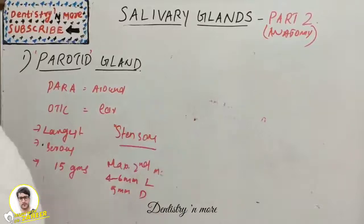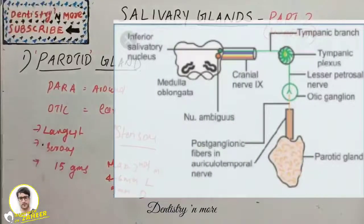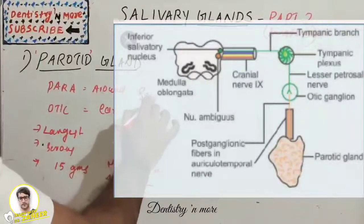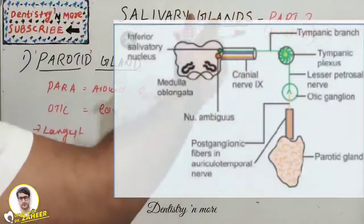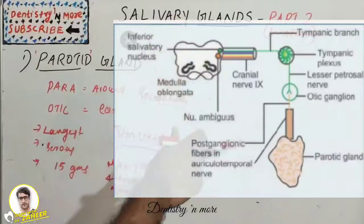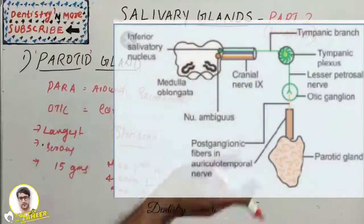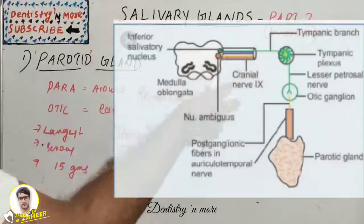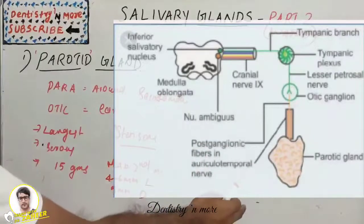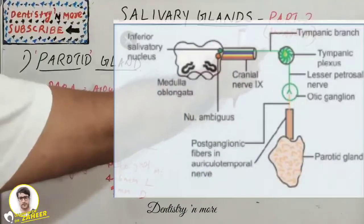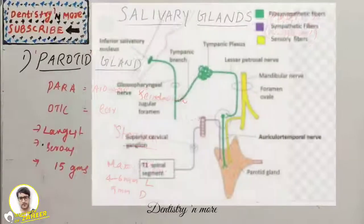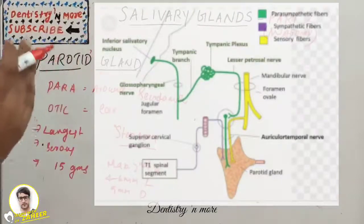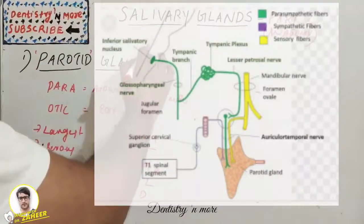The nerve supply to the parotid gland includes parasympathetic secretomotor fibers: preganglionic fibers arise from the inferior salivatory nucleus, travel via the ninth nerve, and relay in the otic ganglion. Postganglionic fibers then travel via the auriculotemporal nerve to the gland. Sympathetic nerves are vasomotor and derived from the plexus around the external carotid artery. Sensory nerves come from the auriculotemporal nerve.